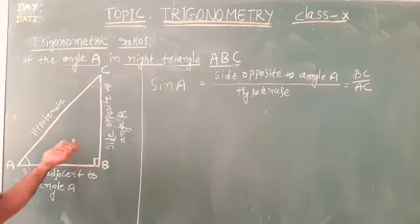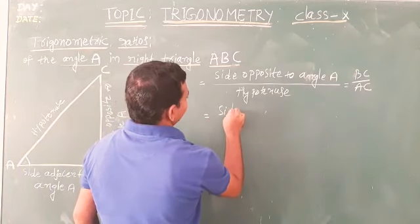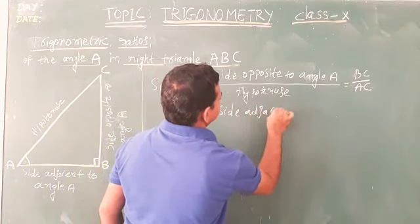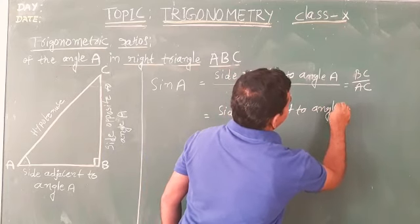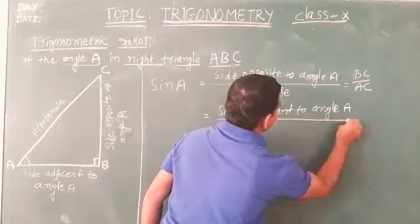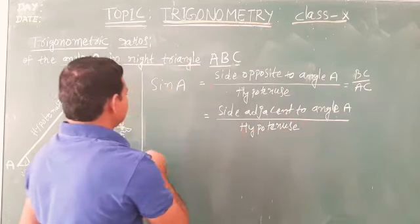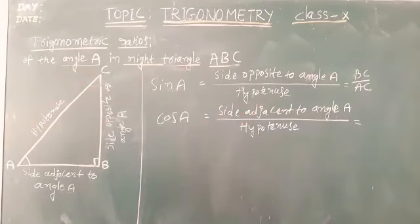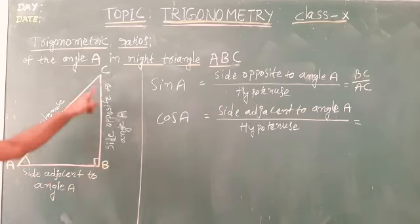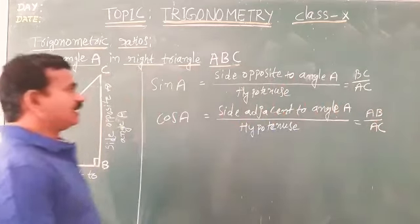Similarly, the ratio of another two sides: if you take the side adjacent to angle A divided by hypotenuse, that gives cos A. So cos A equals the side adjacent to angle A divided by hypotenuse, which in this triangle is AB by AC.